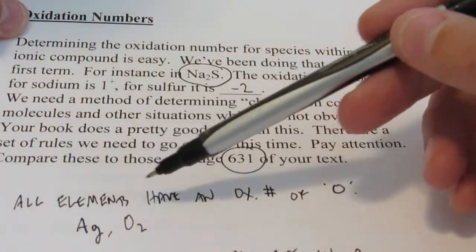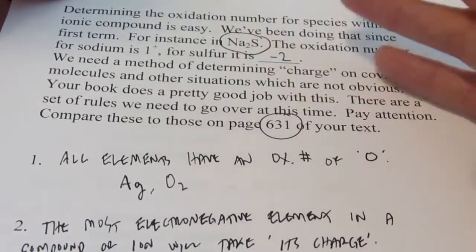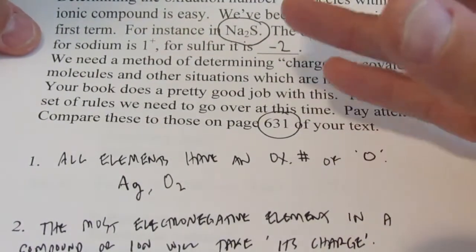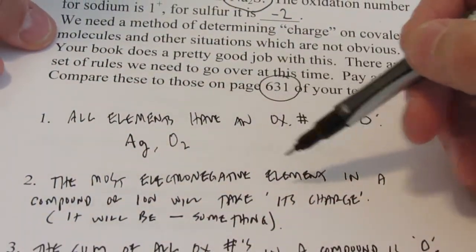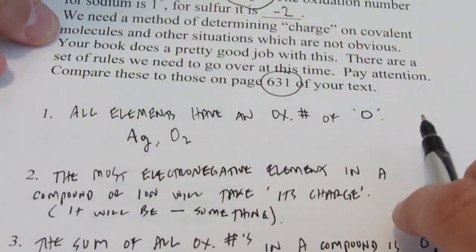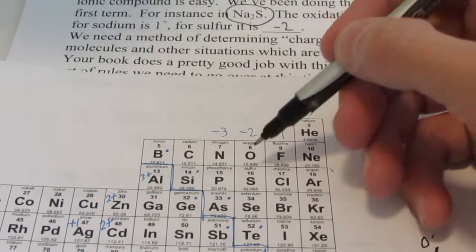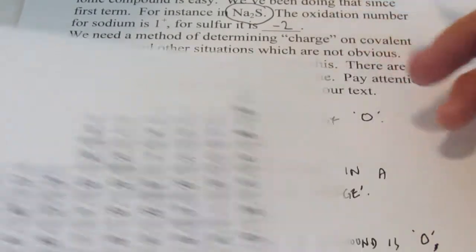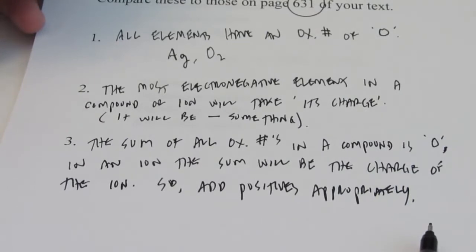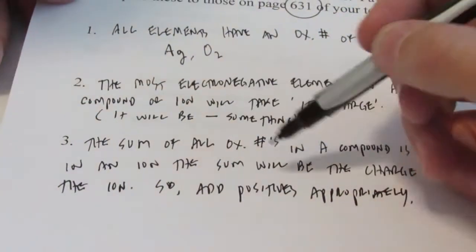Just a quick review of assigning oxidation numbers. All elements have an oxidation number of zero — if something's in its elemental state like silver, oxygen, nitrogen, or magnesium, they will have an oxidation number of zero because they're not sharing or transferring electrons with anything else. Second, the most electronegative element in a compound or ion will take its charge. Electronegativity increases when you move up and to the right. So if oxygen were the most electronegative atom, it would be negative two; if it were fluorine, negative one. And the last rule: the sum of all oxidation numbers in a compound is zero, and the sum of all oxidation numbers in an ion is the charge of that ion.